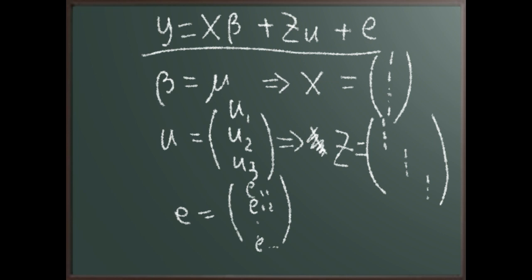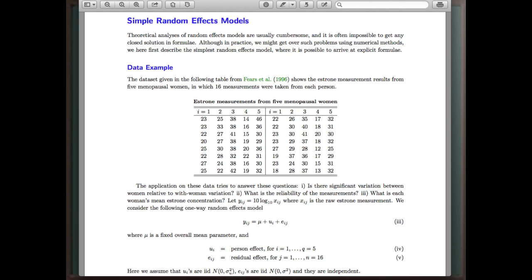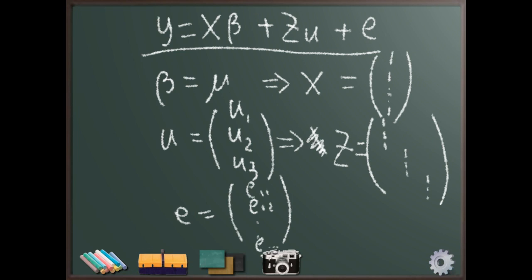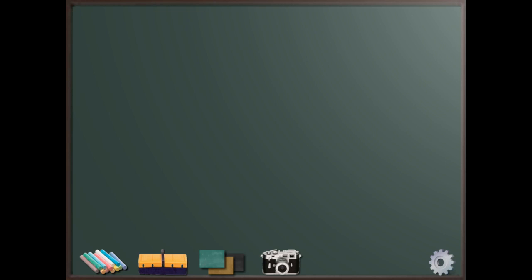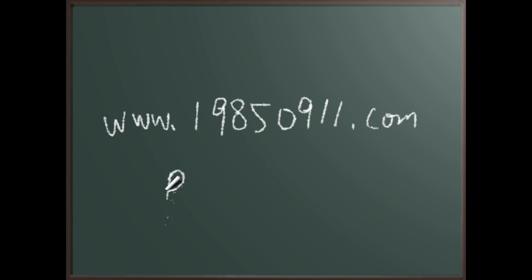Now let's take an example to see how we do this as a linear mixed model in R using the hglm package. I have a document here, and you can also find this document on my home page. If you go to the website and find the Resources tab, you can find this document — it's basically one of my lecture notes for linear mixed models.